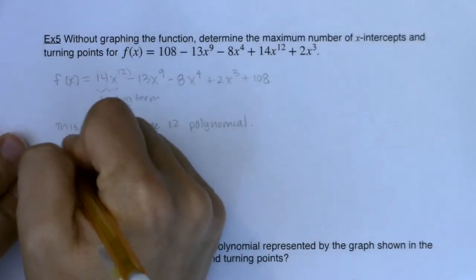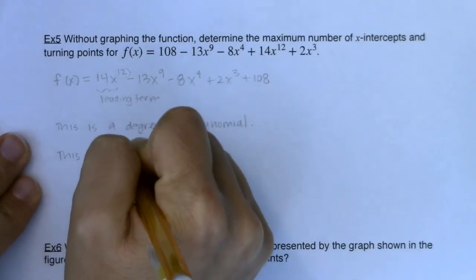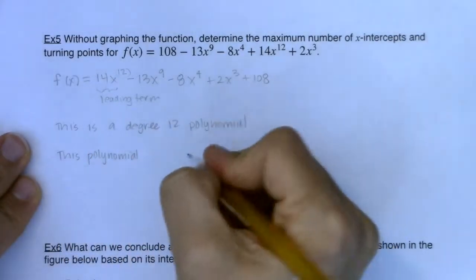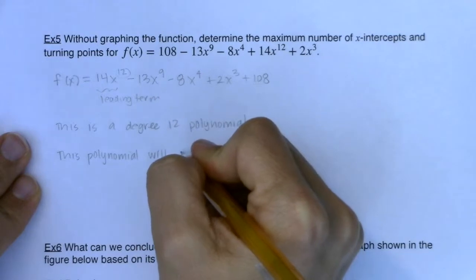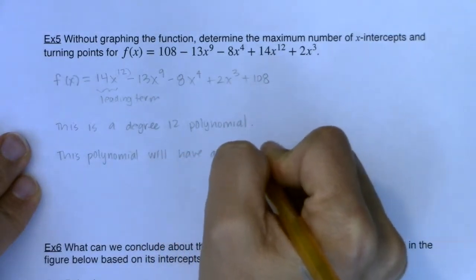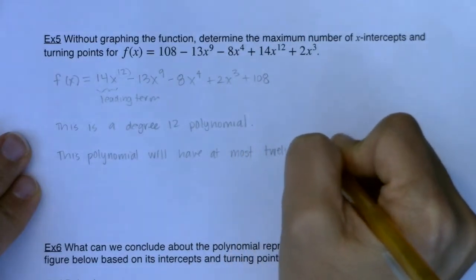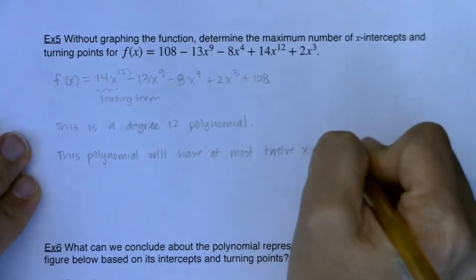So this polynomial will have at most 12 x-intercepts. And just take a moment and think about that. I mean, that means it could cross the x-axis or touch the x-axis 12 times. That is a lot of zeros to have to find and to write out.